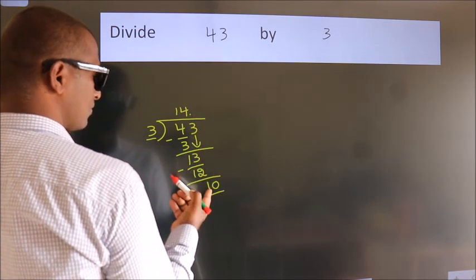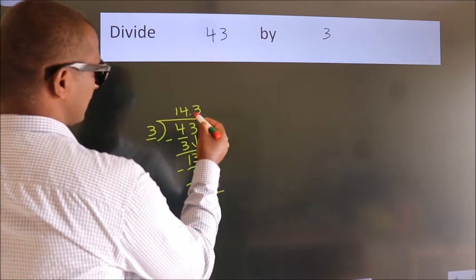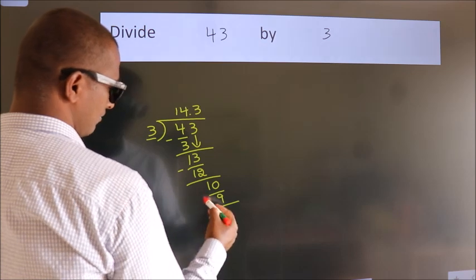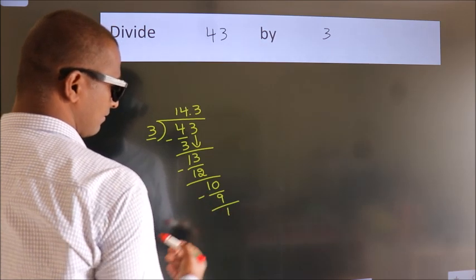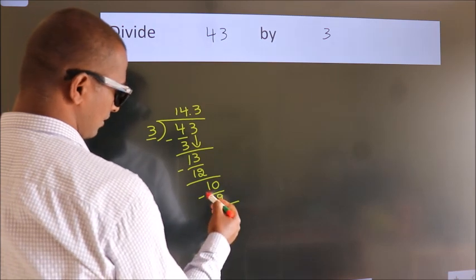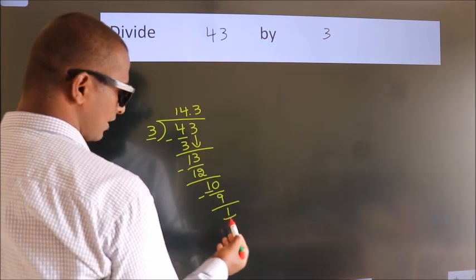A number close to 10 in the 3 table is 3 threes, which is 9. Now we subtract. We get 1. Now you observe: we had 1 here, and we got 1 again.